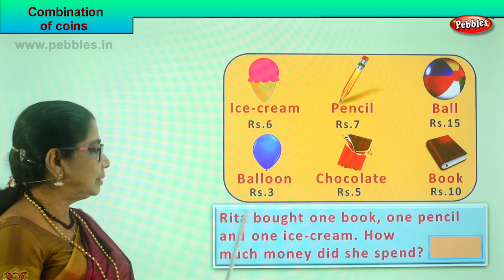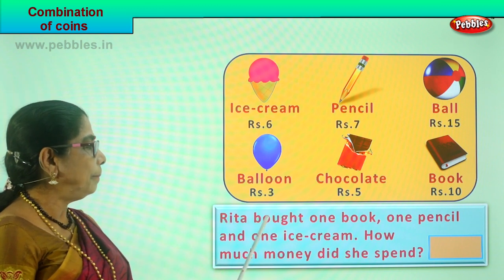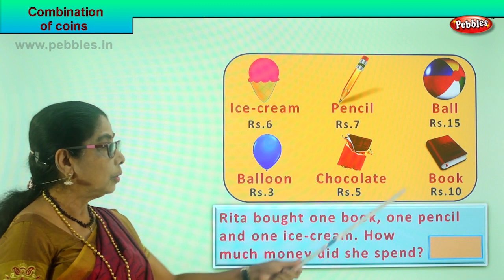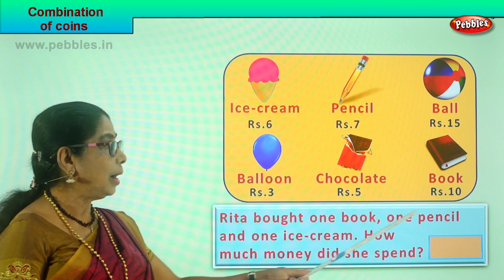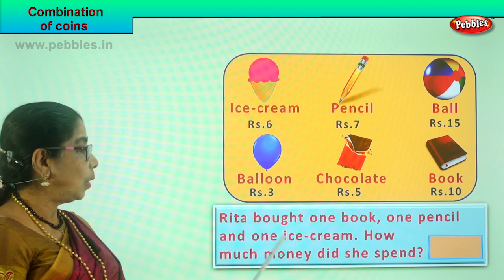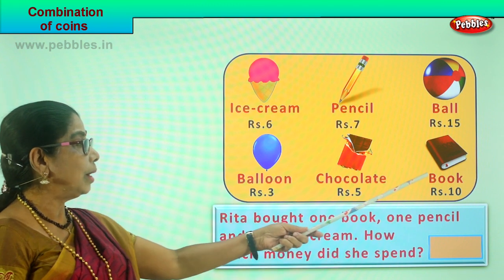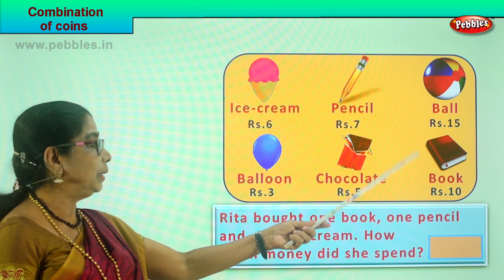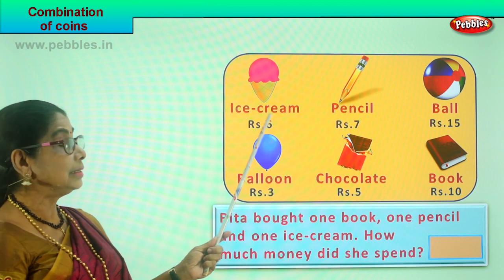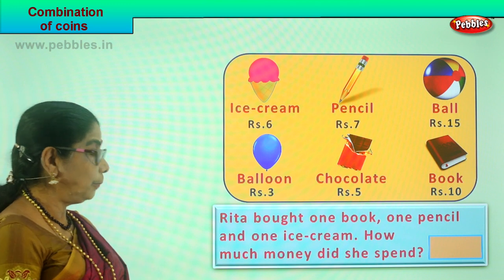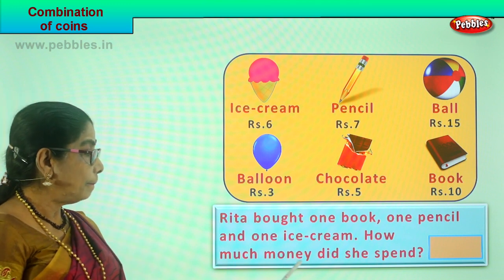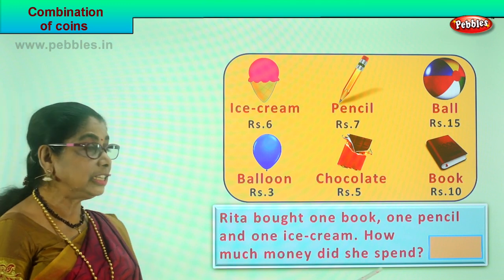Rita says: I bought one book that is ten rupees, one pencil that is seven rupees, and one ice cream for six rupees. One book — ten rupees, one pencil — seven rupees, and ice cream — six rupees. Now the question is: how much money did she spend?